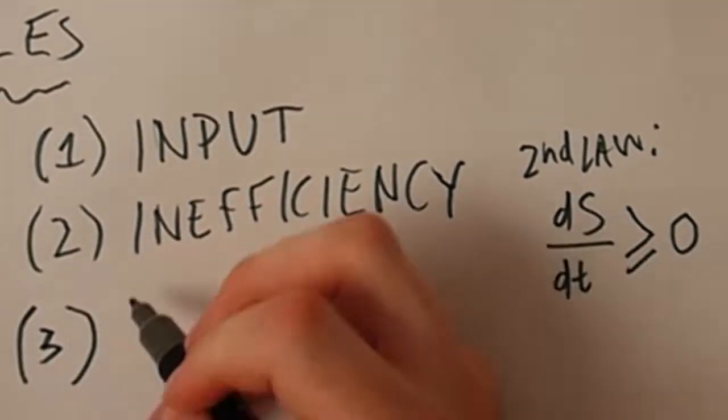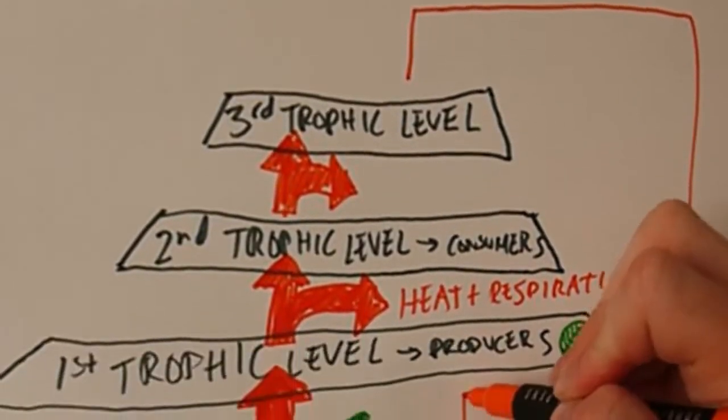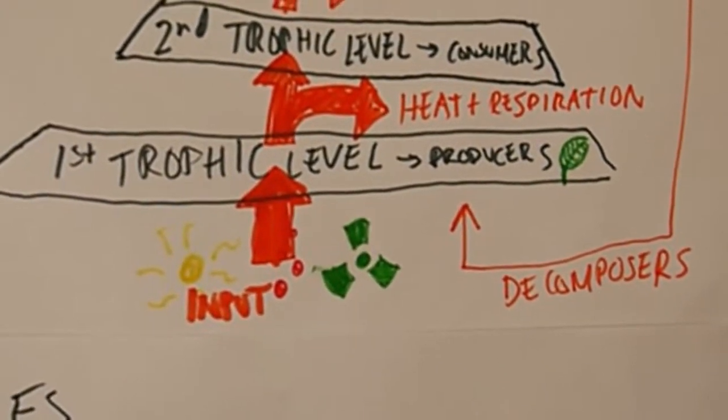Rule 3: Because of this inefficiency there must be recycling of material throughout. This cycle is closed by a group of organisms called decomposers. In other words the trophic pyramid is more of a cycle.